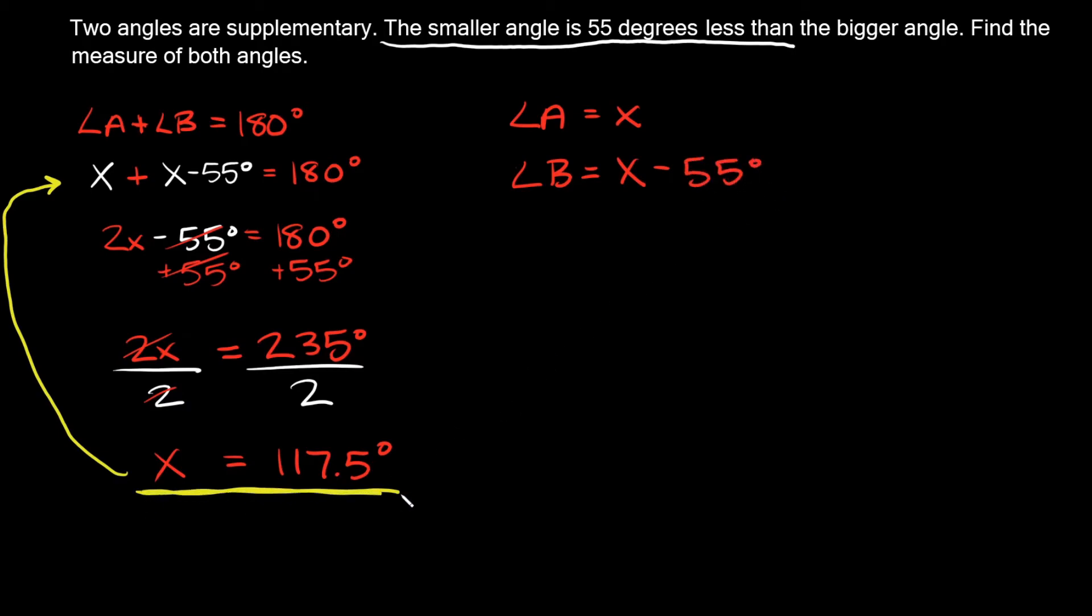But now we know what X is equal to, 117.5 degrees. So here angle A is equal to X, and X is equal to 117.5 degrees. And then angle B is X minus 55 degrees, which would be 117.5 minus 55, and that's equal to 62.5 degrees.